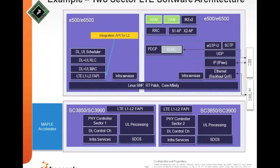For a two-sector LTE solution with DSPs, accelerators, and processors: there are two DSP cores and two Power Architecture cores. One DSP core supports Sector 1 doing all downlink and uplink processing; the second DSP core supports Sector 2. The two DSPs are connected to the power architecture cores via the FAPI interface — the Femto Forum API for communication between L1 and L2. MAC, RLC processing, and the scheduler are part of one core; L2 from different vendors can plug in via the FAPI integration API.